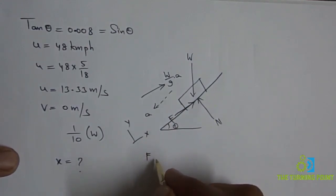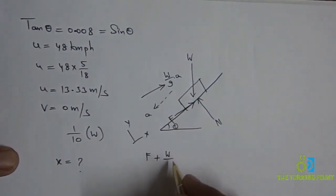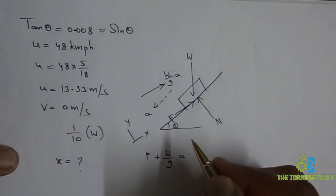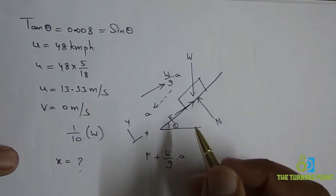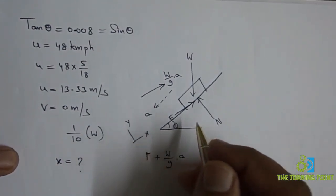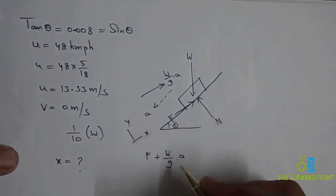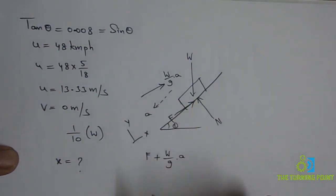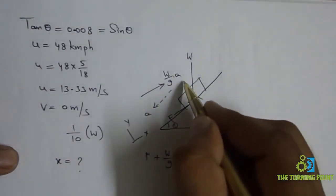F along positive x direction, plus W/G × A along positive x direction. F is over, frictional force is over. One more force is weight component. I forgot to resolve that.